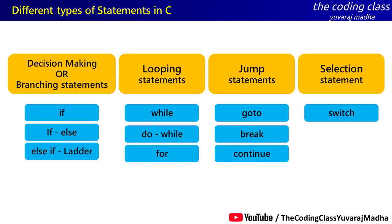These two types of statements in C language — this is the decision-making statement. So what is the decision-making statement? We start with an introduction to the decision-making statement.